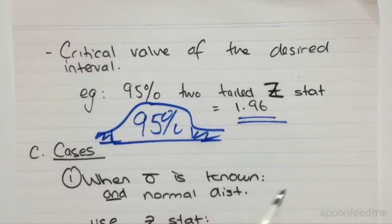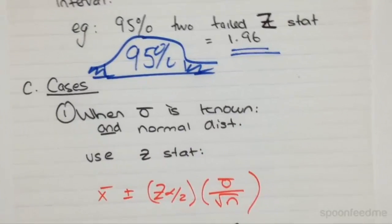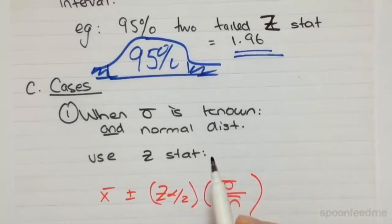So next up, we'll just start by looking at some of the more specific cases for calculating the confidence interval for a population mean.